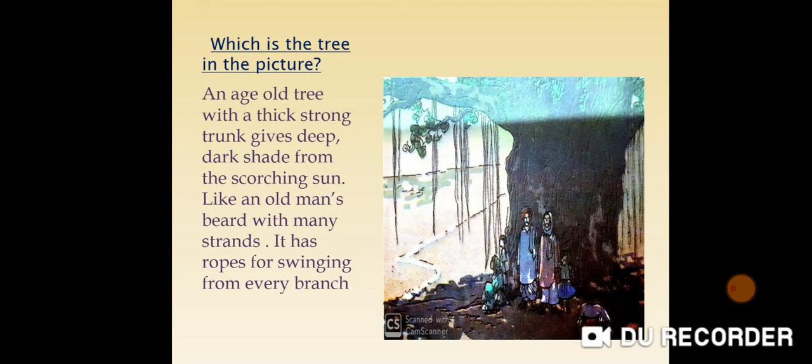Children, see this picture. According to this picture, I ask you one riddle: An age-old tree with a thick trunk gives deep dark shade from the scorching sun, like an old man's beard with many strands. It has rope for swinging from every branch. Do you know the tree in the riddle and the picture? Yes, this is the banyan tree.